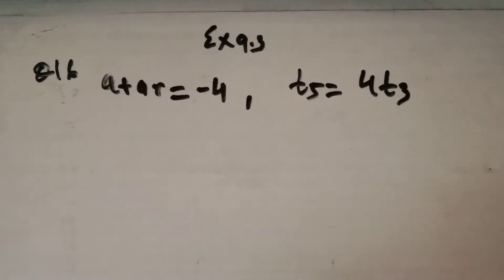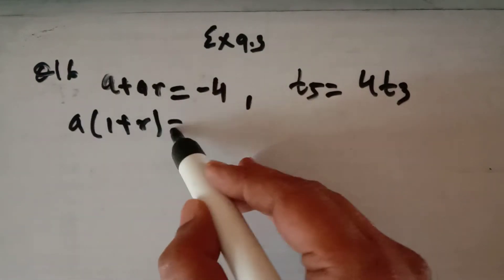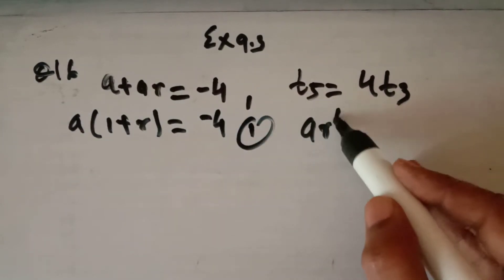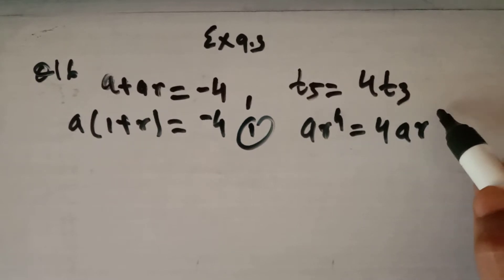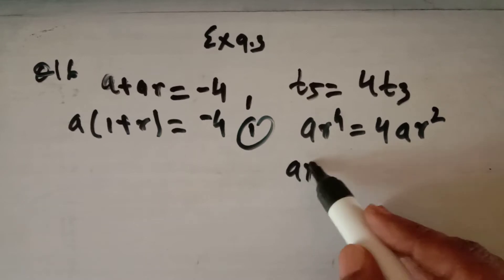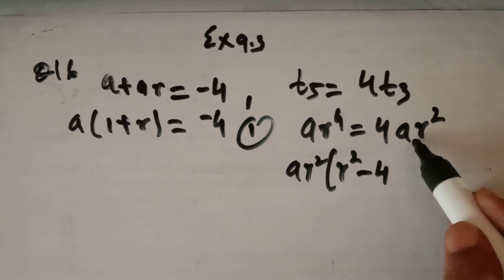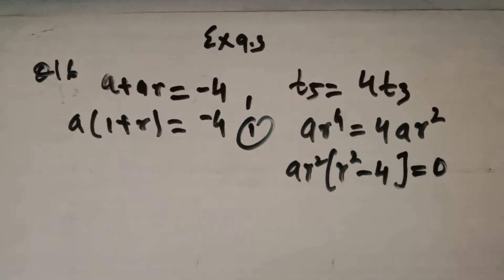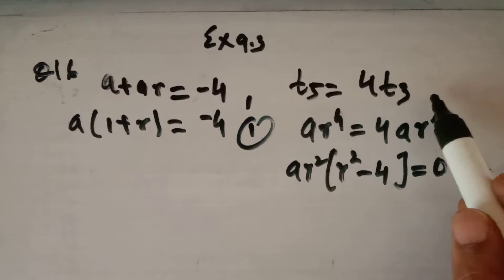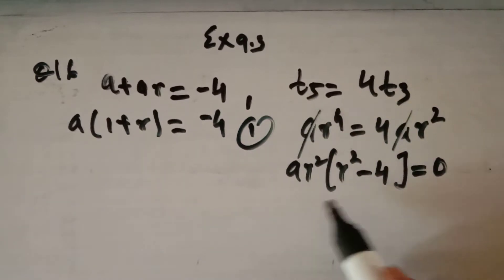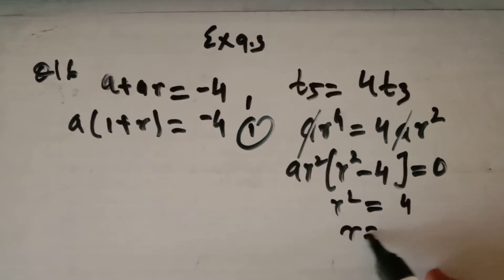We are given two equations in terms of GP. The fifth term a·r⁴ equals four times the third term a·r². Taking a·r² as common, we get r² minus 4 equals 0, giving r equal to plus or minus 2.